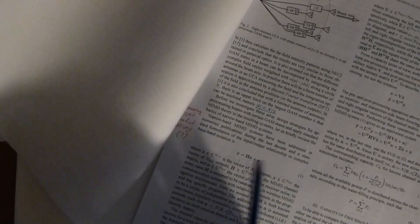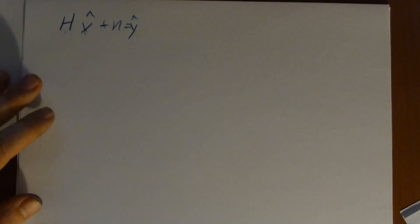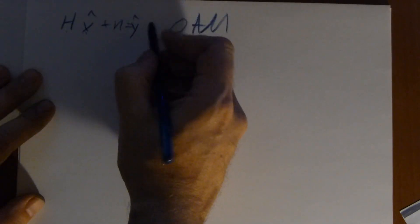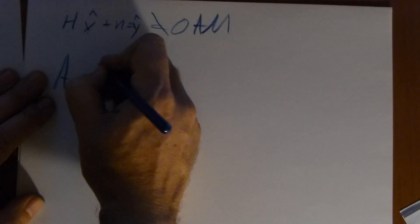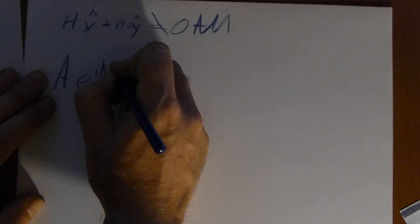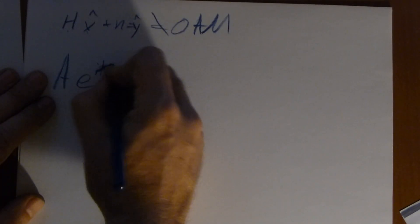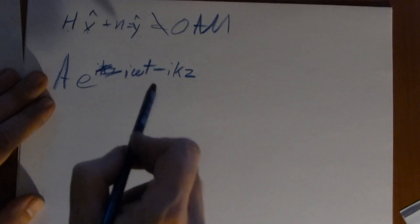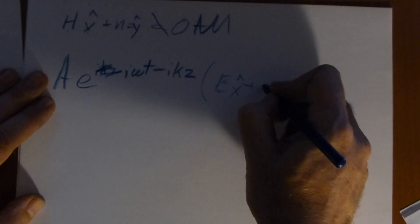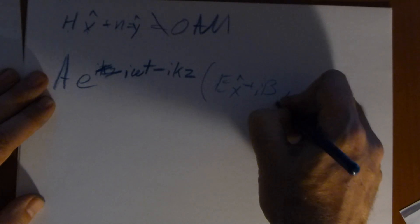What's wrong with that? The problem is that OAM is not a linear combination. You cannot combine, okay, an ordinary electromagnetic wave looks something like, let's say, amplitude, e to the i omega t minus i k z, with something like e in the x direction plus i b in the y direction.